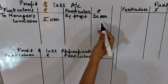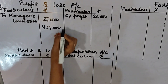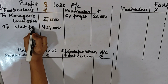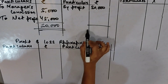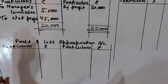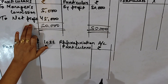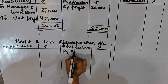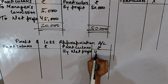Now total it: 50,000 minus 5,000 = 45,000. We write 45,000 as the net profit. Both sides total to 50,000 — balanced. Manager's commission entry is done. Now we create an Appropriation Account and transfer this net profit to the credit side of the Appropriation Account. Here we write: By Net Profit 45,000.